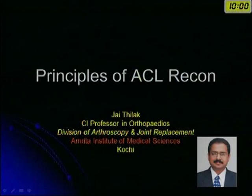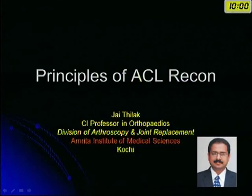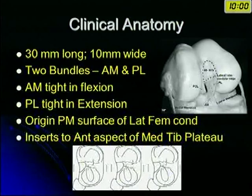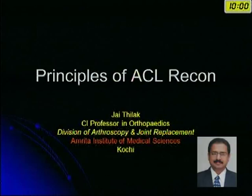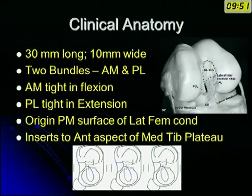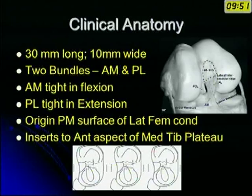Good evening once again. I'll be talking about the surgical principles and what the literature says for ACL reconstructions. A brief note on clinical anatomy: it's a 3 cm long intra-articular ligament, about a centimeter wide. We have classified them functionally as an anteromedial and a posterolateral bundle. The anteromedial bundle is considered tight in flexion of the knee, while the posterolateral bundle is tight in extension.